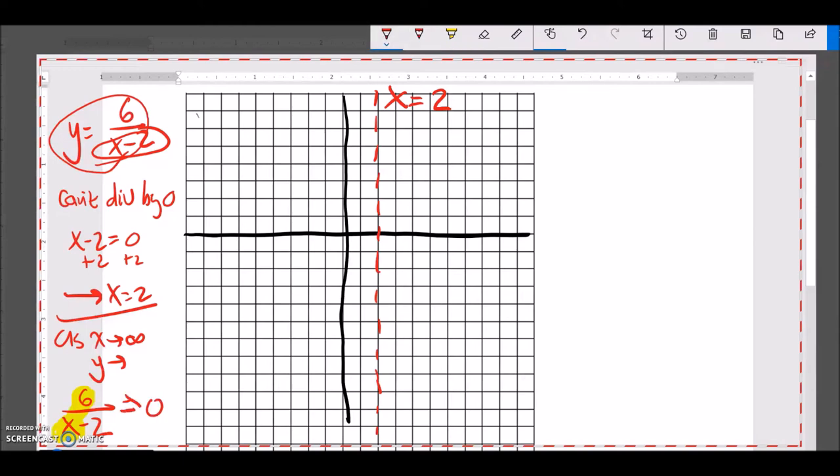So it doesn't equal 0 ever because it just gets closer and closer to it. So that means that I have an asymptote here at y equals 0. In other words, as x approaches infinity, y approaches 0.